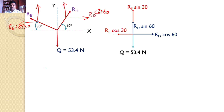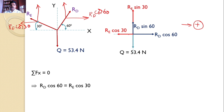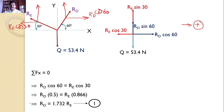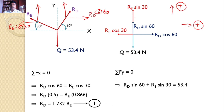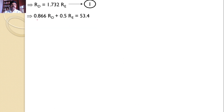Now apply the equilibrium equations. For ΣFx = 0, taking rightward as positive: RD cos60 = RE cos30. Substituting cos60 = 0.5 and cos30 = 0.866, we get RD = 1.732 RE — call this equation 1. For ΣFy = 0, taking upward as positive: RD sin60 + RE sin30 = 53.4. Substituting sin60 = 0.866 and sin30 = 0.5 gives: 0.866 RD + 0.5 RE = 53.4.